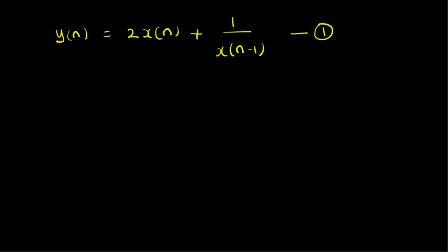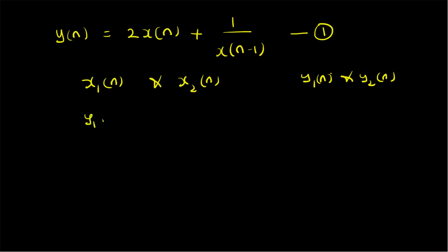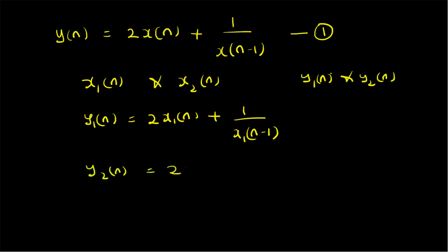Consider two inputs x1(n) and x2(n) which have corresponding outputs y1(n) and y2(n). So, y1(n) is 2 times x1(n) plus 1 by x1(n) minus 1, and y2(n) is 2 times x2(n) plus 1 by x2(n) minus 1.